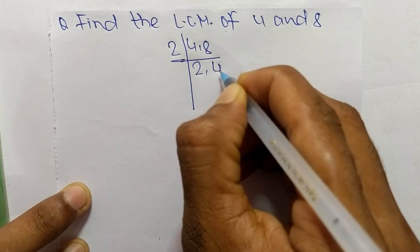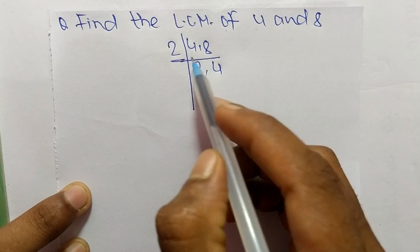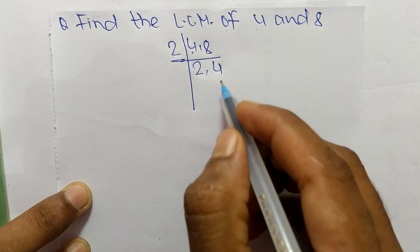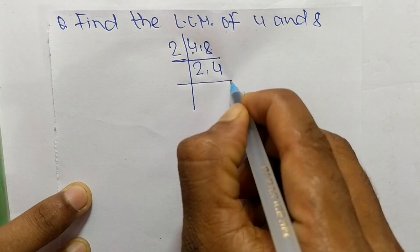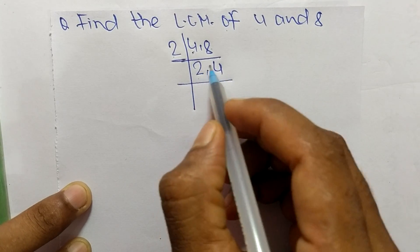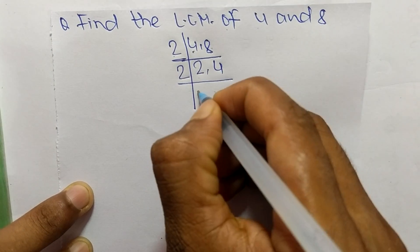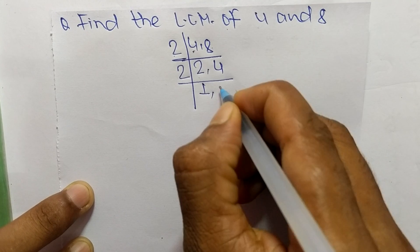4, and 2 times 4 means 8. The same number can divide both numbers. Now we again get 2 and 4. These both numbers are also divisible by 2, so 2 times 1 means 2, and